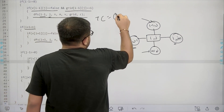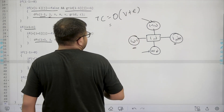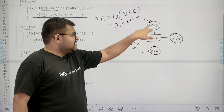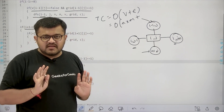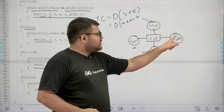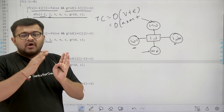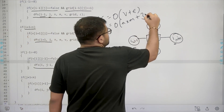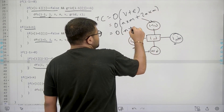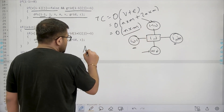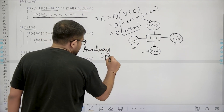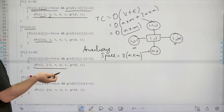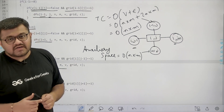We call DFS only for land cells on the boundary, and subtract the count from the answer. For time complexity: DFS is O(V + E), vertices are n×m, edges are approximately 4n×m / 2 = 2n×m, so total time complexity is O(n×m). Auxiliary space is also O(n×m) due to the visited array.